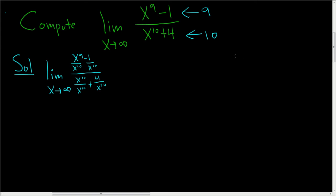What we really did was we took x to the 9th minus 1 over x to the 10th plus 4. And one way to think about it is we multiplied by 1 over x to the 10th over 1 over x to the 10th. And then when you distribute, you get what we have over here.